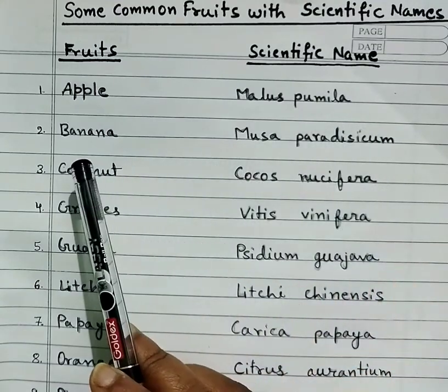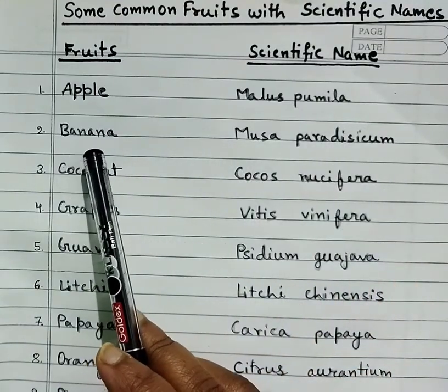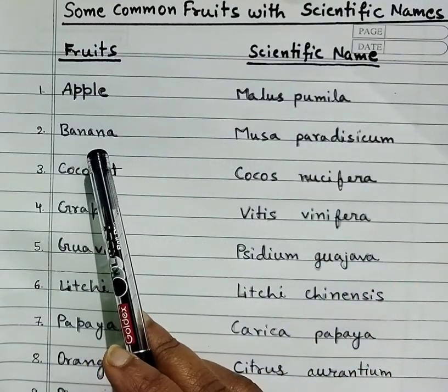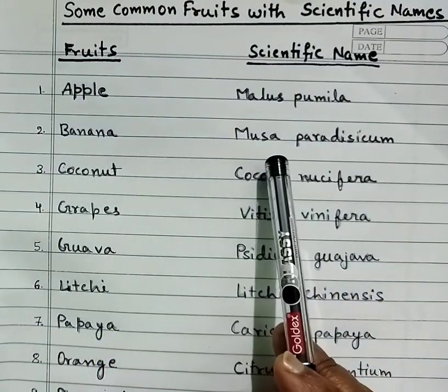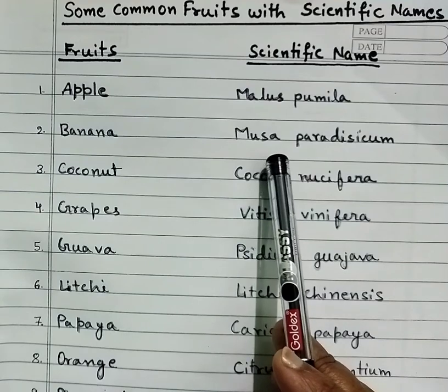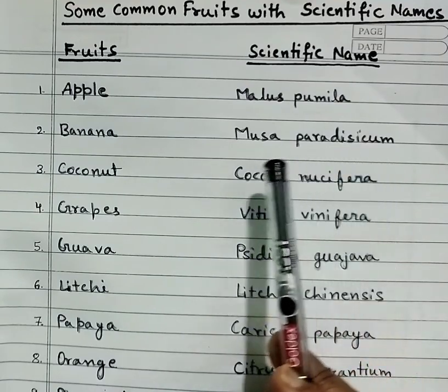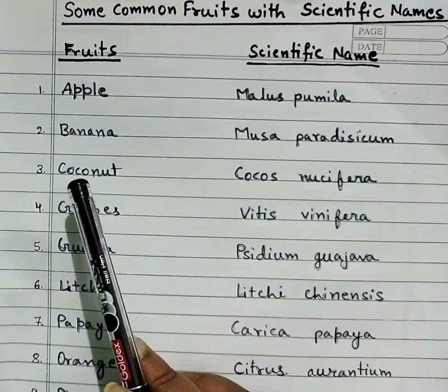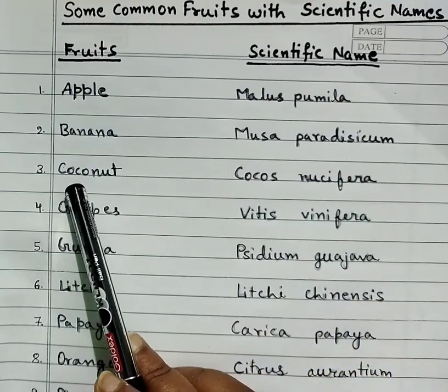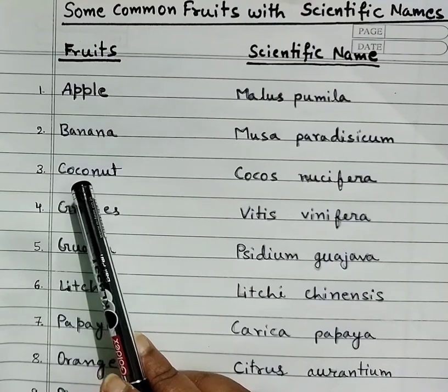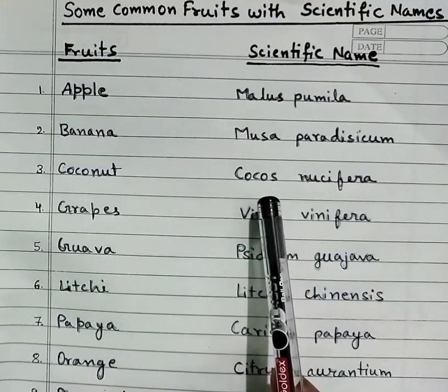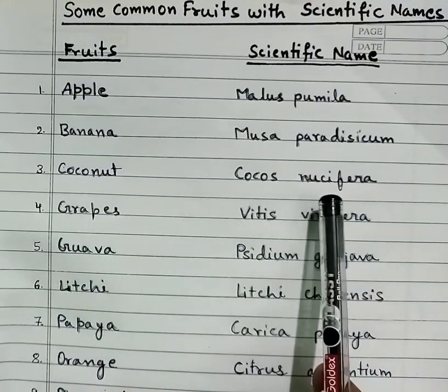Second is banana, Musa paradisicum. Third is coconut, Cocos nucifera.